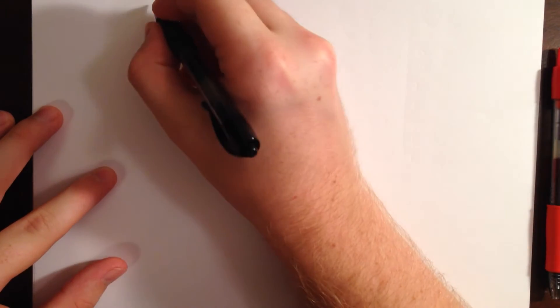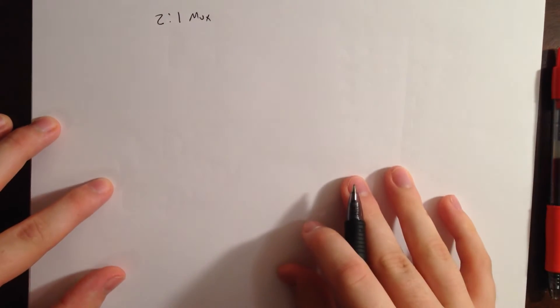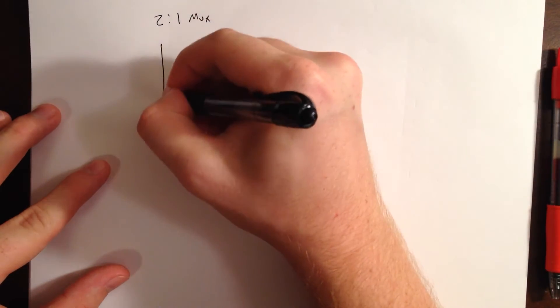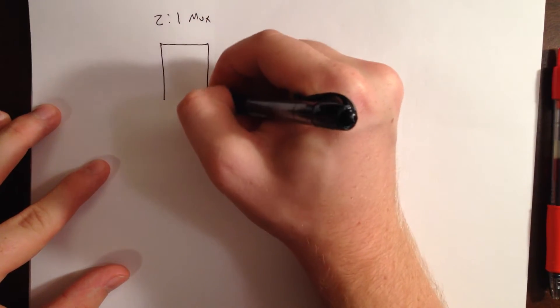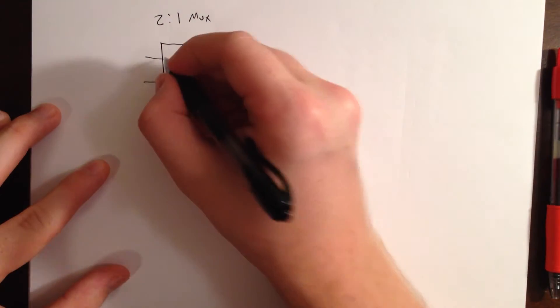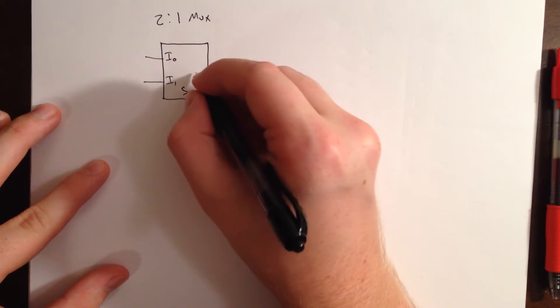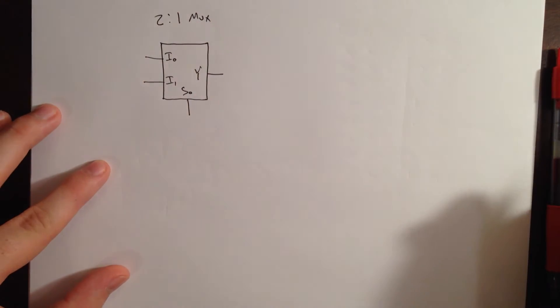So, you may recall that a 2:1 multiplexor looks something like this. With our 2 inputs, selector, and output. We called this I0, I1, S0, and Y.